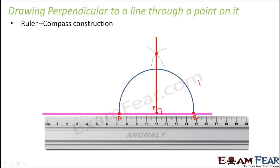To recap, this construction is a four-step process. Step one: draw an arc with P as center such that the arc intersects the line at points A and B. Step two: with B as center, draw an arc with radius greater than PB. Step three: with A as center, draw an arc with radius greater than AP. Step four: join the point of intersection of the two arcs to point P — this line is perpendicular to AB. We can call this point M, so PM is perpendicular to AB.